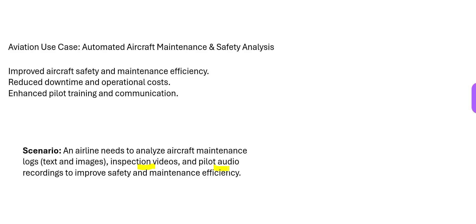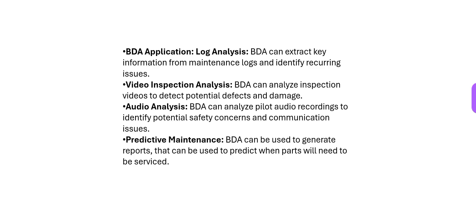Why should you analyze these things? You can check whether the maintenance person is carrying out inspection properly by looking at the video, or whether spare parts look old. You can also check whether the pilot's audio suggests carelessness. You can run BDA on maintenance logs to see if there are recurring issues — maybe a nut or bolt keeps being a problem. Inspection of video and audio, and even predictive maintenance: feed the data and know that after 8 months you will need to service those spare parts.